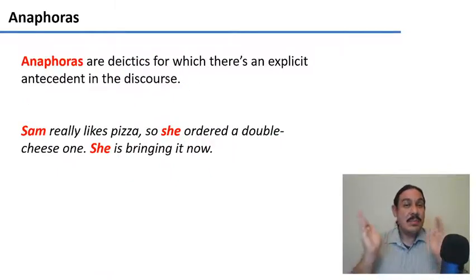There's a subgroup of deictics called anaphoras. Anaphoras are a kind of deictic, like a pronoun, for which there is an explicit antecedent somewhere in the preceding discourse.